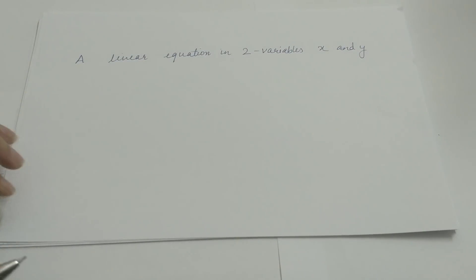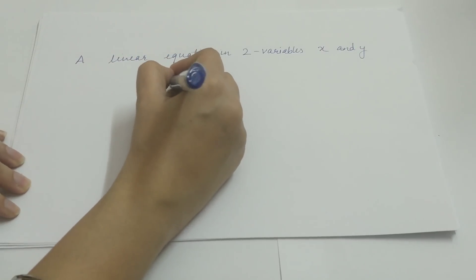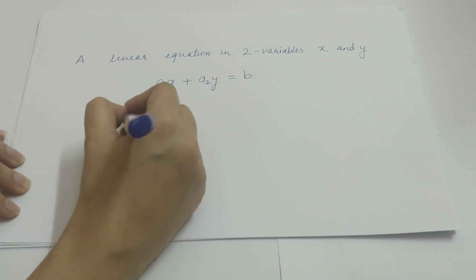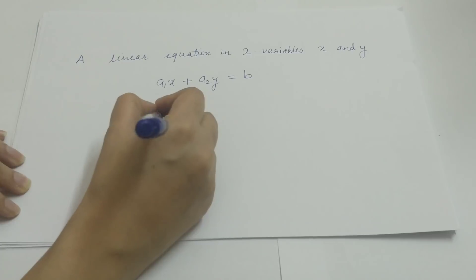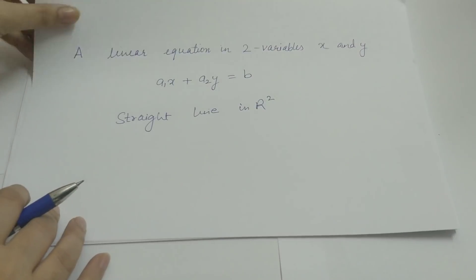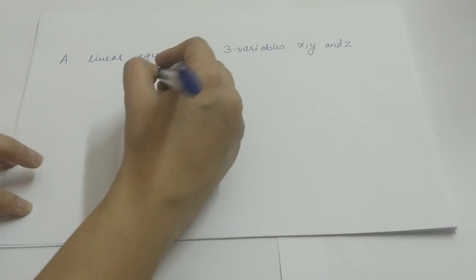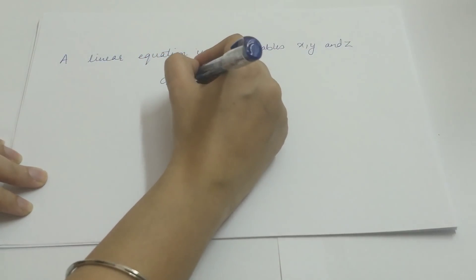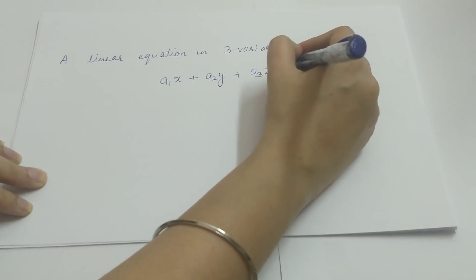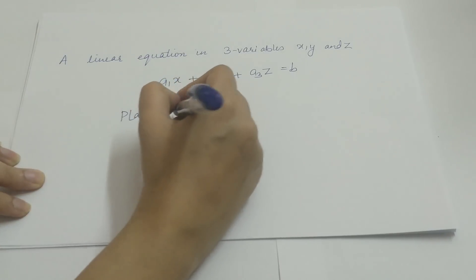A linear equation in two variables x and y is of the form a1x + a2y = b and it represents a straight line in R2. Similarly, a linear equation in three variables x, y and z is of the form a1x + a2y + a3z = b and it represents a plane in R3.